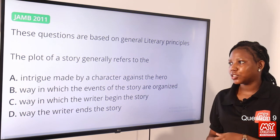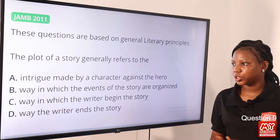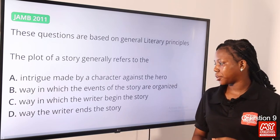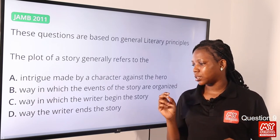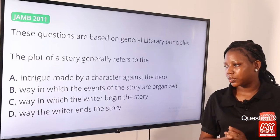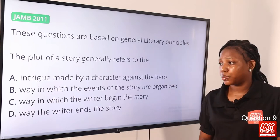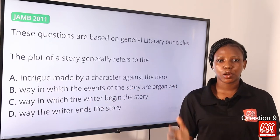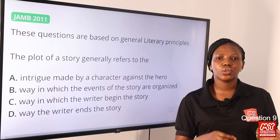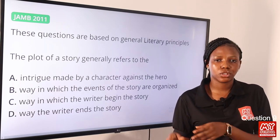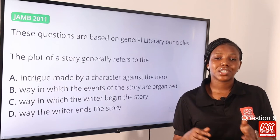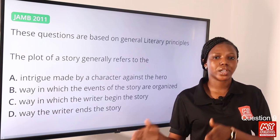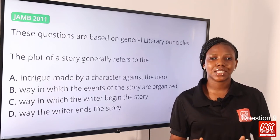Question 9. A plot of a story generally refers to the dash. Option A: intrigue made by a character against the hero. Option B: way in which the events of the story are organized. Option C: way in which the writer begins the story. Option D: the way the writer ends the story. The answer is option B. A plot is the chronological or systematic arrangement of events of a story — how the story should progress. So option B is the correct answer.